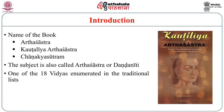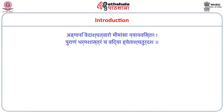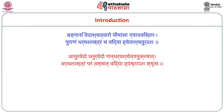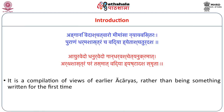The eighteen vidyasthanas are: the four Vedas, the six Vedangas, and then Nyaya, Mimamsa, Purana and Dharmashastra — these make fourteen. On top of the fourteen, another four are added: Ayurveda, Dhanurveda, Gandharvaveda (that is music), and also Arthashastra. This is the eighteenth vidyasthana, traditionally reserved for the ruling class.